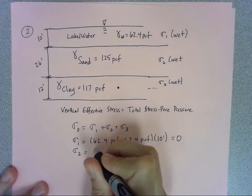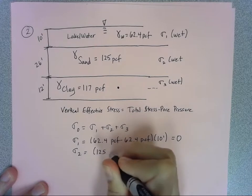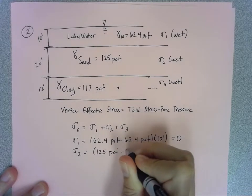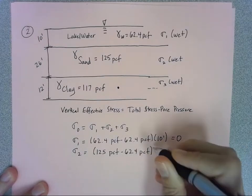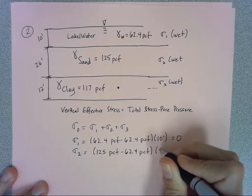For sigma 2, though, I've got something because I have 125 pounds per cubic foot that I'm subtracting 62.4 from, and I'm going to multiply that through the whole thickness, which is 26 feet. Let's go ahead and do that to figure out the second part.